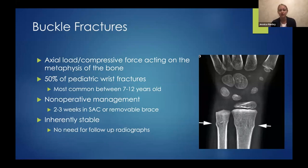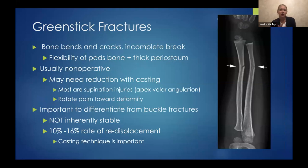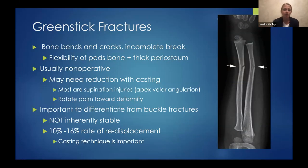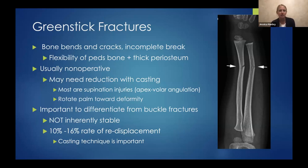Buckle fractures are inherently stable, so you do not need radiographs to confirm healing — they're almost always non-painful at around two weeks. Moving on to greenstick fractures, these are unique to children, very different from buckle fractures. It's a bending and partial cracking of the cortex — unlike buckle fractures, they are not inherently stable. We need to monitor these; they may need a reduction. Most are supination injuries, and as taught in training, you rotate the palm towards the deformity to correct it. Casting technique is important.